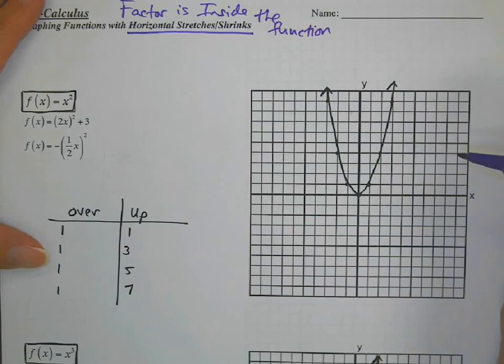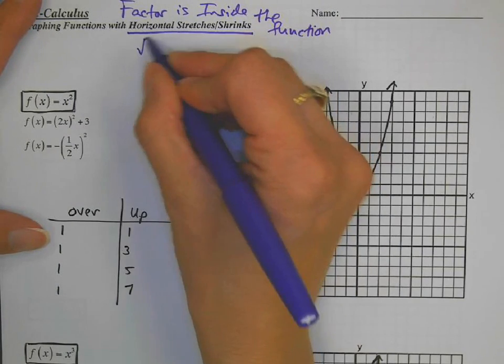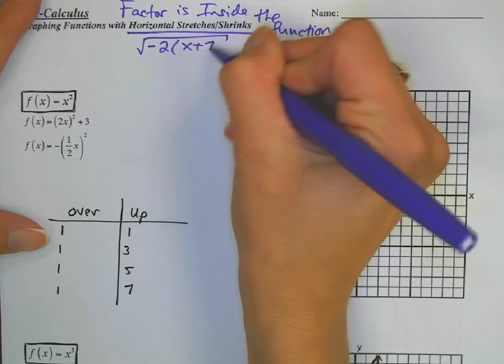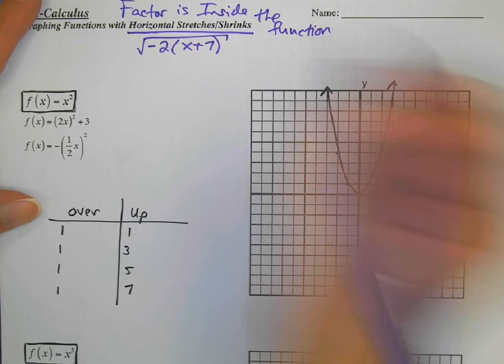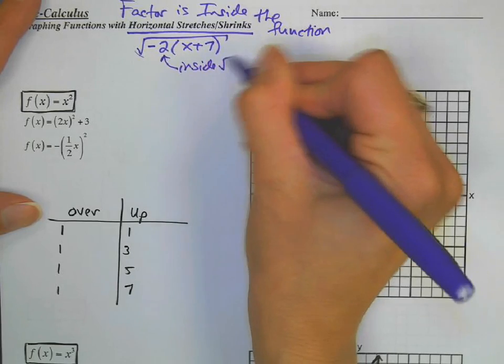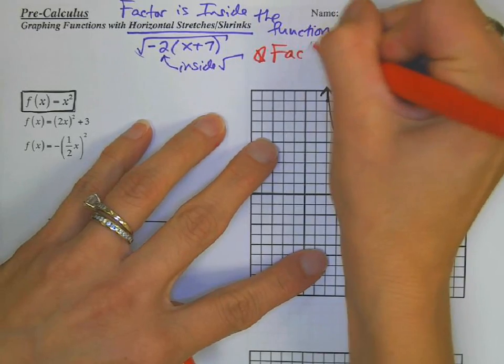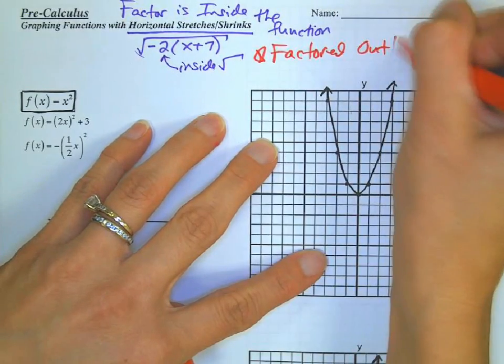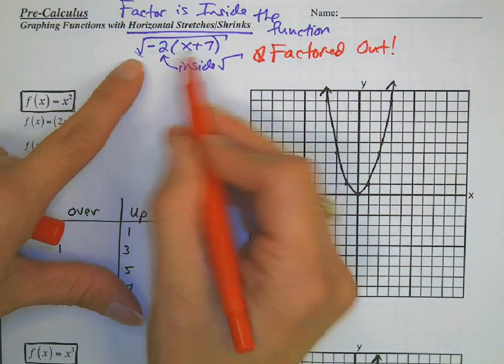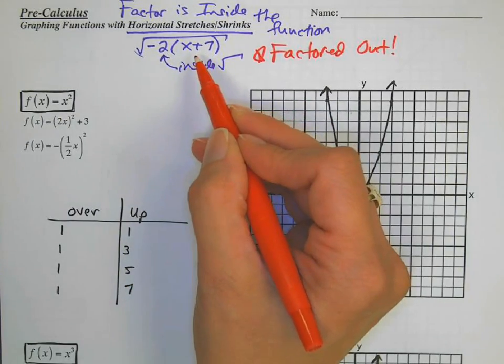That means it's going to be inside the radical, inside getting squared. For example, negative 2 times the quantity x plus 7 is under the radical. Notice how the 2 here is inside the radical, but it is factored out. You cannot have that 2 inside by the x. You have to factor it out so everyone knows to shift 7 units to the left.